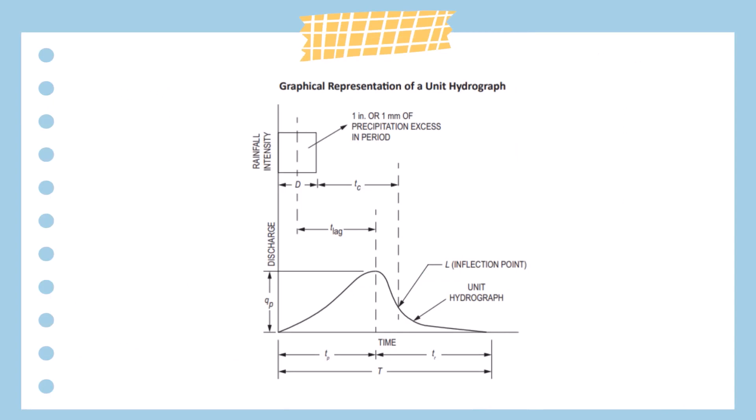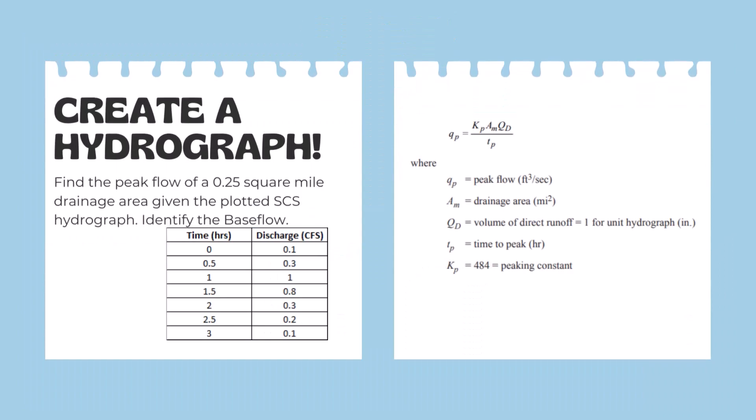Let's try another problem where we create a hydrograph, find the peak flow of a quarter square mile drainage area given the plotted SCS hydrograph, and then identify the base flow as well. We have the time and discharge, we'll go ahead and plot that and use our equation. Peak flow equals the peaking constant times the drainage area in square miles times the volume of direct runoff, which we'll be using one inch for, over the time to peak.